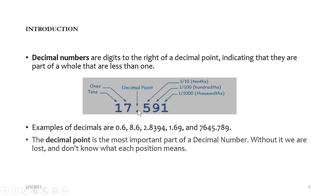Since they are to the right of the decimal point, the number 5 is called tenths — tenths means one tenth, or one over ten. The number 9 is called hundredths. The number 1 is called thousandths. That is why the number 5 is one over ten, the number 9 is one over a hundred. The numbers here, because they are less than one, there cannot be units when placing the place value. All the numbers to the right of the decimal point are what we call decimal numbers.